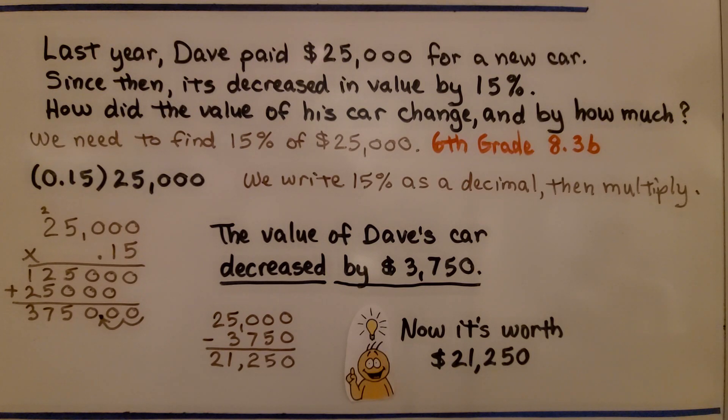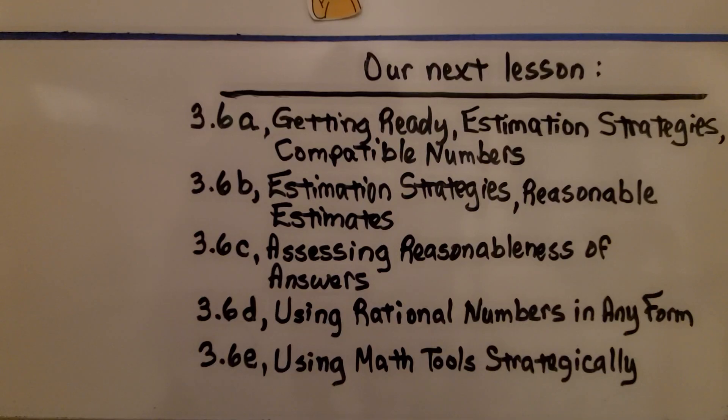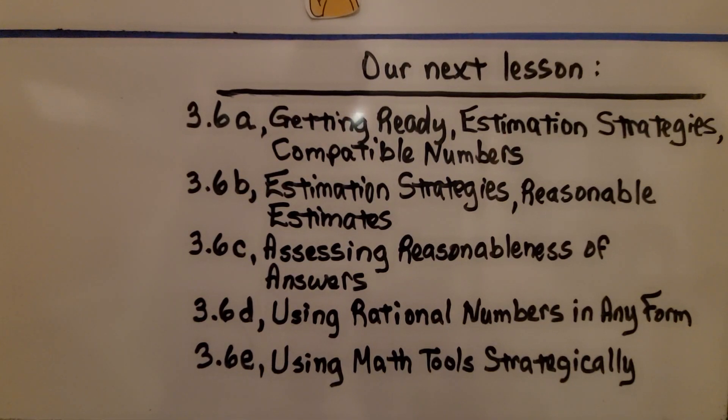And, just out of curiosity, what would it be worth now? Well, all we have to do is do the 25,000 minus the 3,750, and we know it's now worth $21,250. Okay, we're finally finished with lesson 3.5.